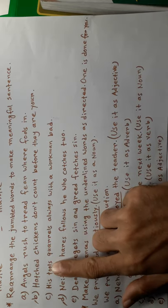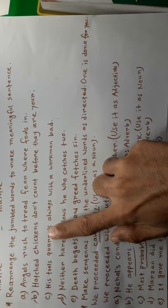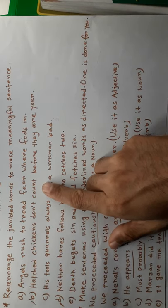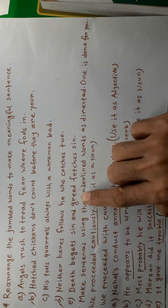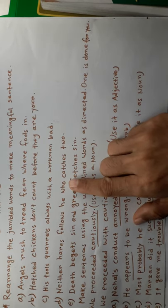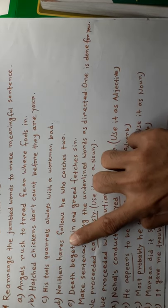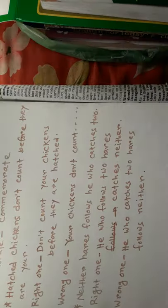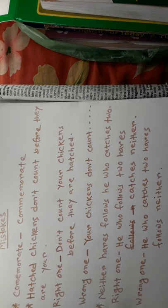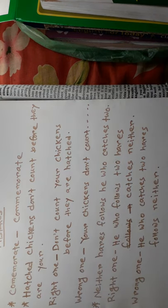The first correction: 'hashed chickens don't count before they are your' — the correct one would be 'Don't count your chickens before they are hatched.' Next one: 'neither has follows he who catches two' — it would be 'He who follows two hares catches neither.'